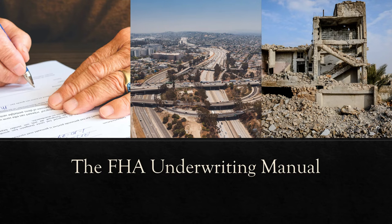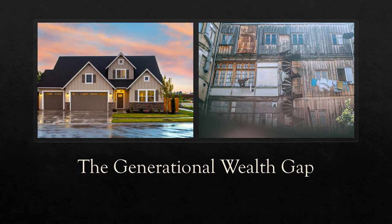Developments following the implementation of redlining further segregated American cities, with a document from the Federal Housing Administration saying, 'Incompatible racial groups should not be permitted to live in the same communities.' The FHA proposed building walls in Detroit that would physically separate the residents of Black communities from others. The underwriting manual even suggested redlining Black neighborhoods next to highways to protect wealthier areas.